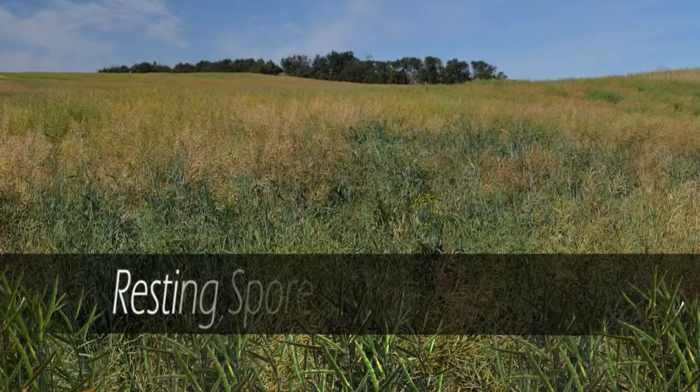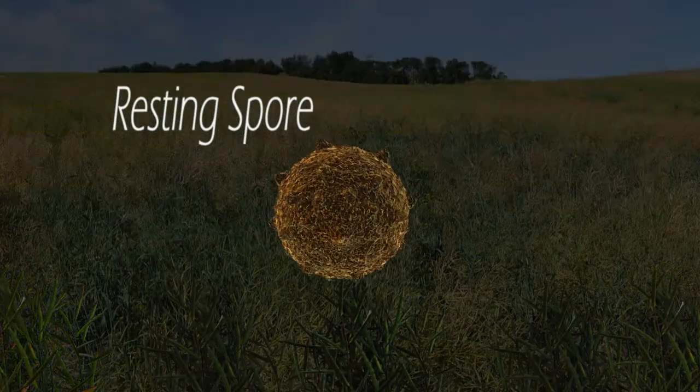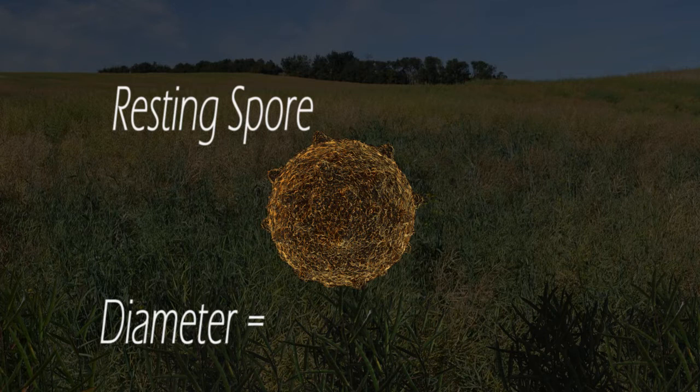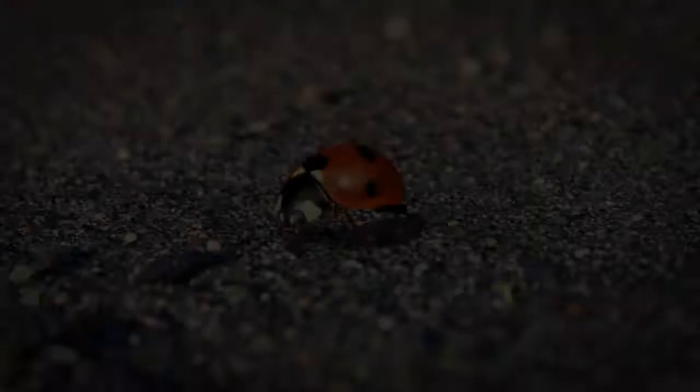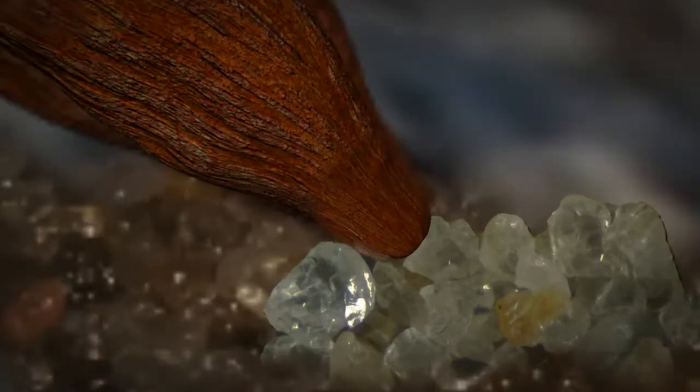Plasmodiophora brassicae starts its life cycle as a resting spore. This spore, although very small, is remarkably hardy and can persist in the soil for up to 20 years.